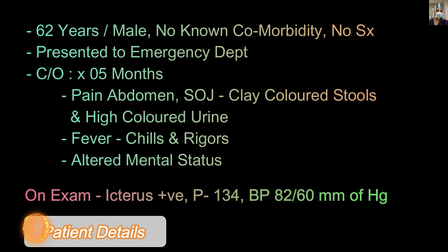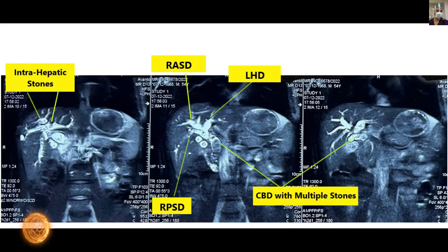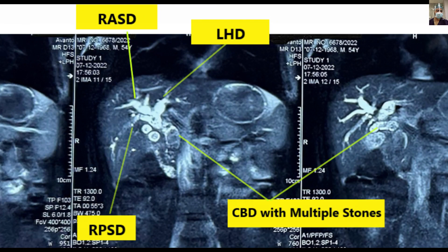Briefly, this was a case of a 62-year-old gentleman who presented with acute cholangitis. The grades of cholangitis were discussed in a previous video available free on our app and YouTube. We managed the patient conservatively with antibiotics and IV fluids, then performed emergency ERCP stenting. These images show the extensive stone burden in the extra-hepatic and intra-hepatic bile ducts. The concept of primary and secondary hepatolithiasis and the Type 3B biliary anatomy have already been covered.